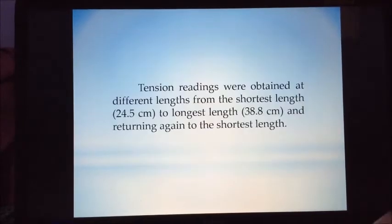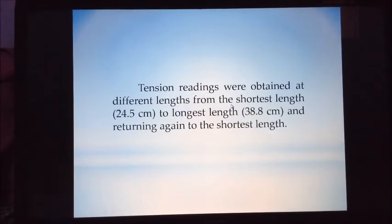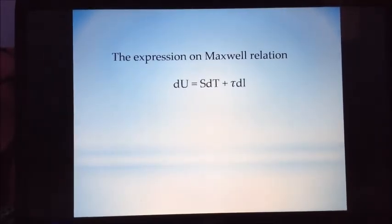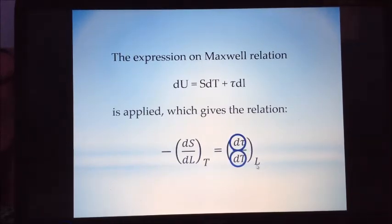If we know the tension at changing length, we know the df of the system. Now, we know the free energy. How about the entropy of a system? The expression on Maxwell relation, du is equal to sdt plus tau dl. When Maxwell relation is applied to this equation, a relationship will arise. A negative entropy can be measured by this: a change in tension with respect to a change in temperature at constant length.